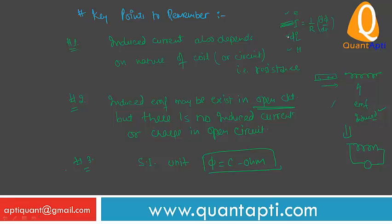From the definition of current, we know that i is equal to one upon R d phi by dt. So if we want to find the value of phi, d phi is equal to i R dt. i is current in ampere, R is in ohm, and time is in seconds.